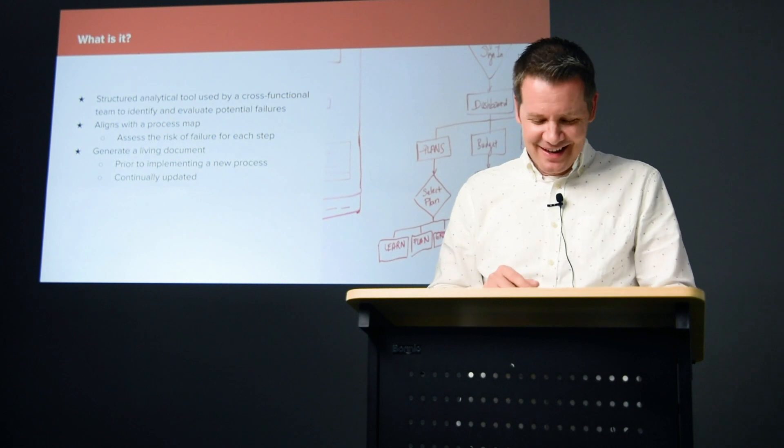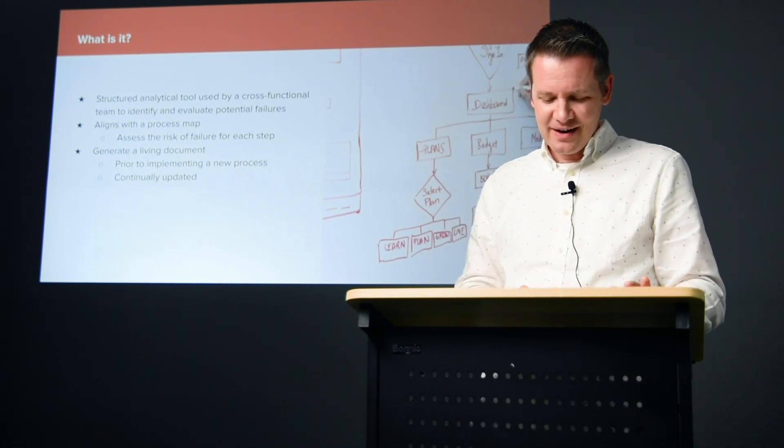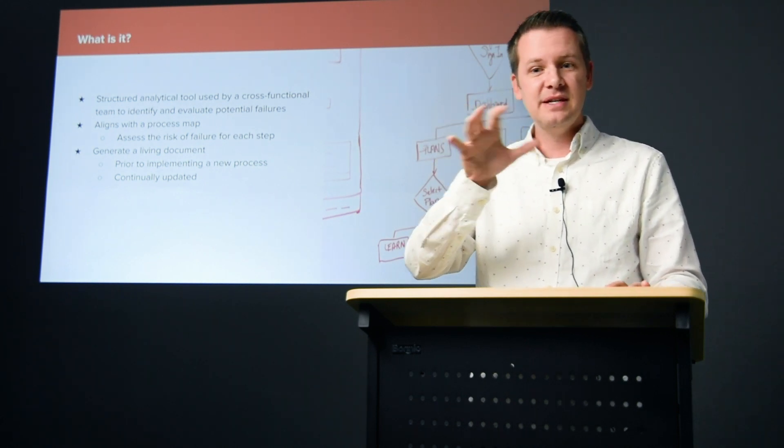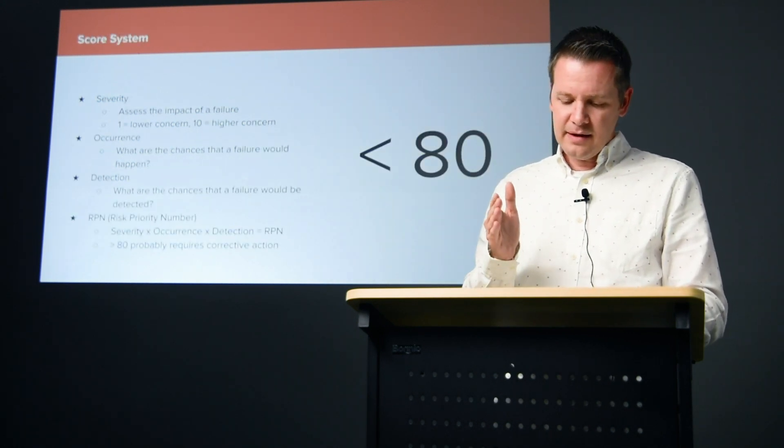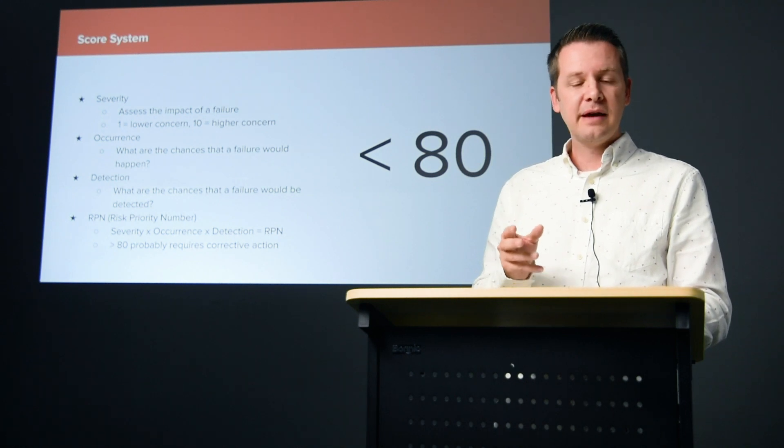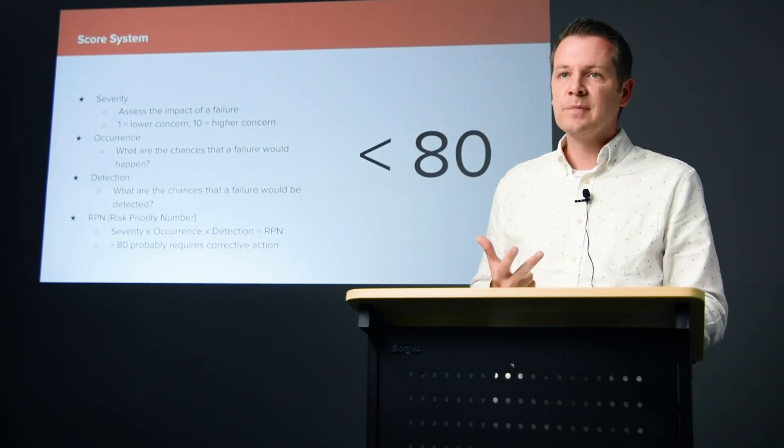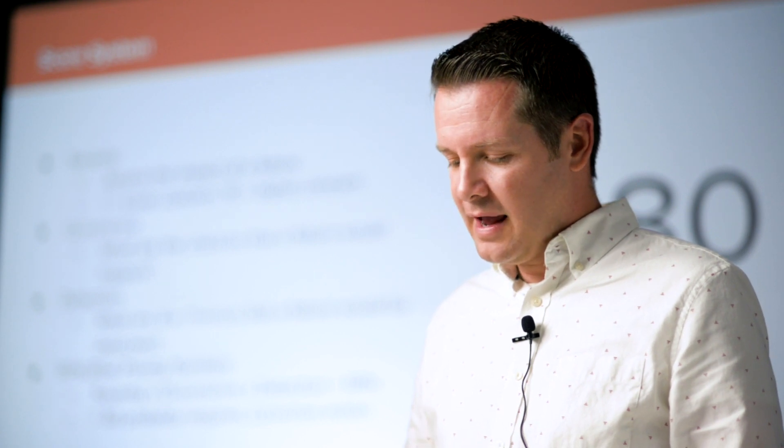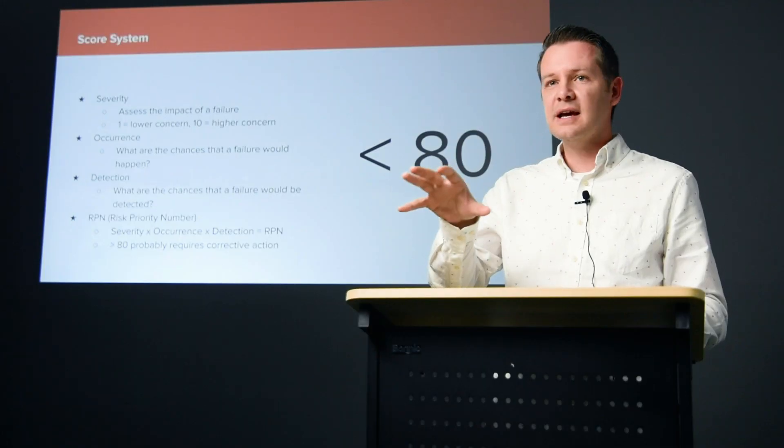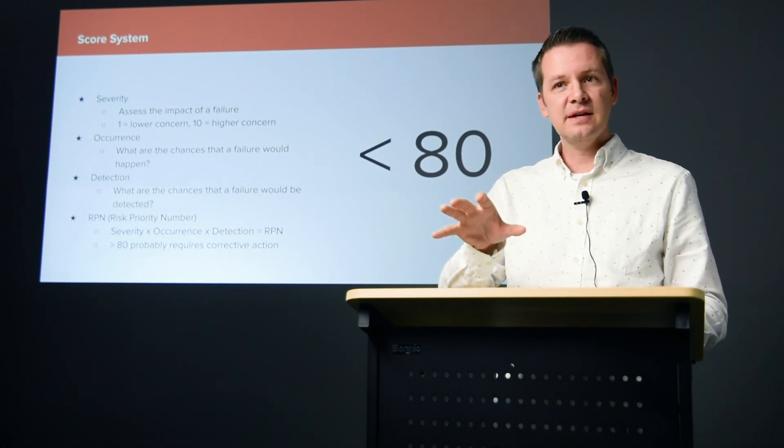The scoring is a score of one through ten broken down into three categories: severity, occurrence, and detection. Severity is the impact that a failure would have. One would be something we're not too concerned about, ten obviously very concerned, very bad if it failed. An eight or higher is something we should definitely dig into and take a look at.